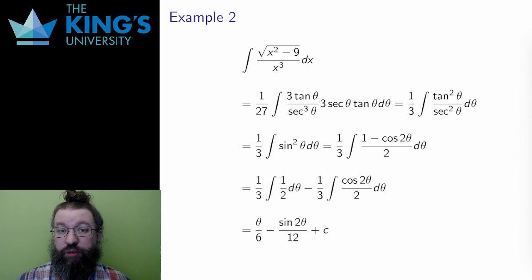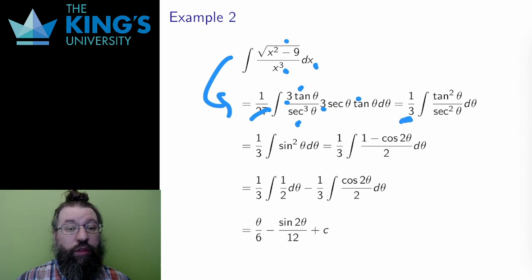And here is the substitution. All the pieces are changed into pieces involving theta. There are some simplifications to make. I can cancel out the two 3s to make 1 over 27 into 1 over 3 in front. 1 sec cancels as well to give the integral of tan squared theta over secant squared theta.